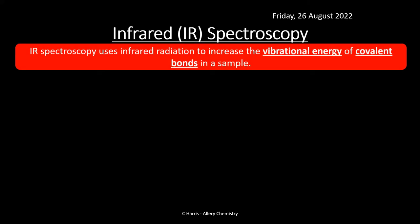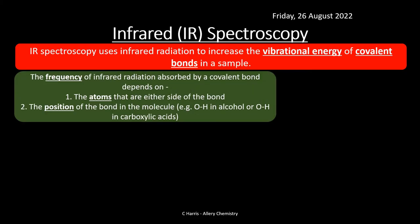I like to call infrared the messy spectroscopy. The spectra you get are actually quite messy — there are loads of different peaks. Infrared spectroscopy uses infrared radiation to increase the vibrational energy of covalent bonds in a sample. Infrared is heat, so you fire infrared at a molecule and the bonds start vibrating. The frequency of infrared radiation absorbed depends on two things: the atoms either side of the bond, and the position of that bond in the entire molecule.